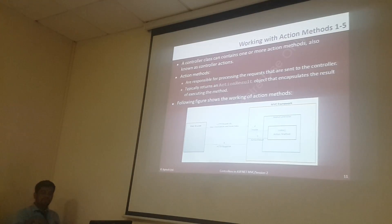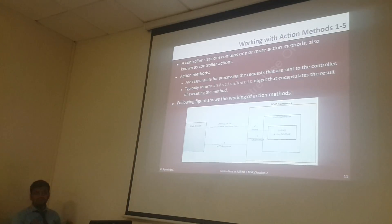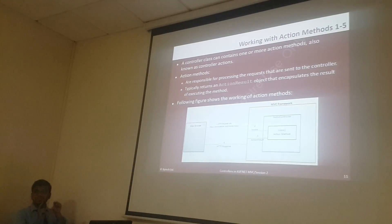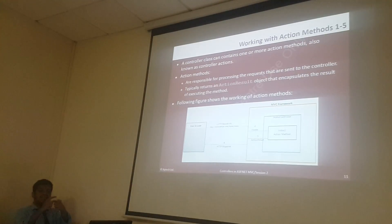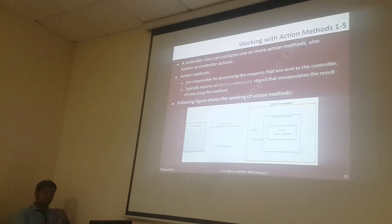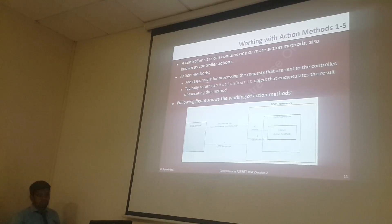Whenever you enter the URL, there is a result from the action. By default, the Home controller's Index method will be served. Suppose if you are writing the URL with slash Home slash About, that means there is a request you are sending — you are requesting the Home controller's About action method. So, as a result, it will be responding. These action methods are responsible for processing the request.